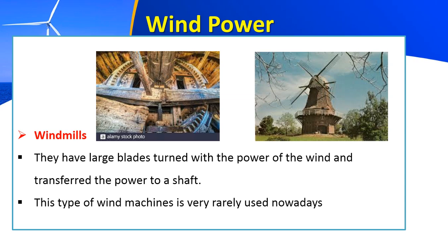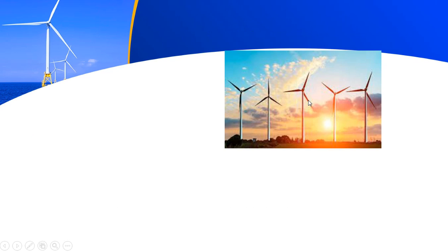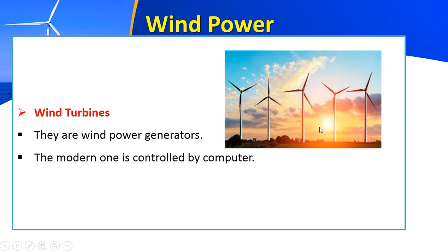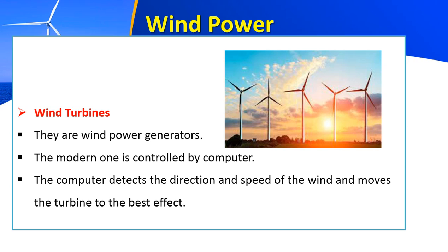The type of wind machine — this very old one — is rarely used nowadays. What's used now? This one. You have seen it if you have traveled by car, for example. We call these wind turbines; they are wind power generators. The modern wind turbine is controlled by a computer. The computer detects the direction and the speed of the wind, and also moves the turbine to get the best effect.